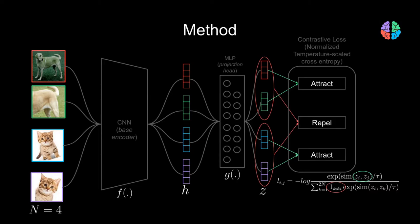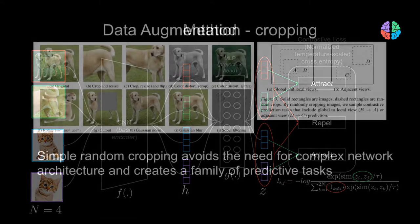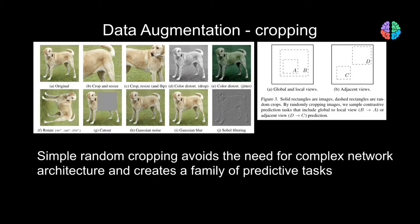In other words, the representations of a dog and a cat should repel. If you understand this, you understand the SimCLR architecture. However, this architecture alone doesn't do the magic — you will need several other techniques to go with it. The first and most important trick is data augmentation. While previous methods to contrastive learning introduced architecture changes, SimCLR argues that random cropping of a target image sets up enough context for contrastive learning.